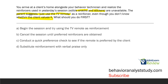Answer A: begin the session and try using the TV remote as reinforcement — but before that, we should do a quick assessment. Answer B: cancel session until preferred reinforcers are obtained — we can't do that; some days reinforcement is a struggle and we can't just skip session. Answer C: conduct a quick preference check to see if the remote is preferred by the client — yes, it takes 5–10 minutes and helps us determine whether to use the remote. Answer D: substitute reinforcement with verbal praise only — that's not what we should do first when we have the remote suggestion. The answer is C: conduct a quick preference check.